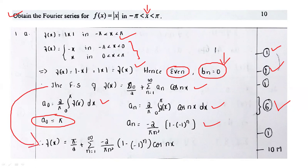Ultimately, f(x) will be equal to pi by 2 plus sigma n equal to 1 to infinity, where a_n equals minus 2 by pi n squared times (1 minus (minus 1) to the power n), multiplied by cos(nx). You substitute everything together — this is your core formula. Let me mark it so you understand it better. Kindly refer to this core formula and remember it.